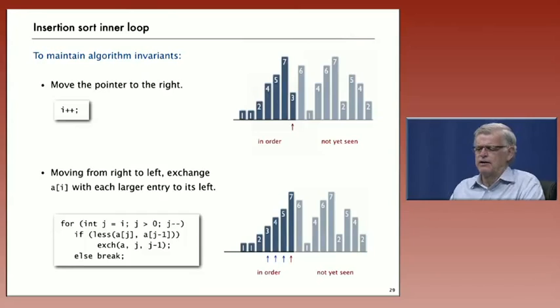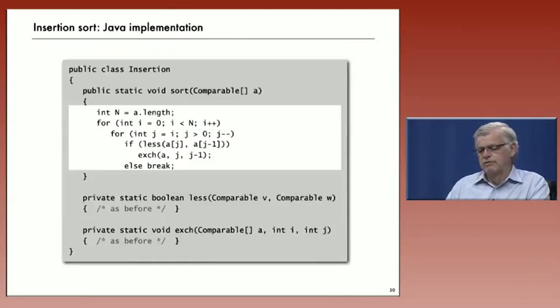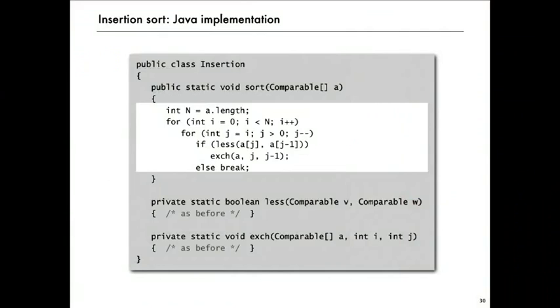It starts J at I and decrements J, exchanging J with the elements to its left, A[j] with the element to its left A[j-1] as long as A[j] is less than A[j-1] or J is bigger than 0. And that immediately gives this code for insertion sort which is similar to our code for selection sort. And just as simple.